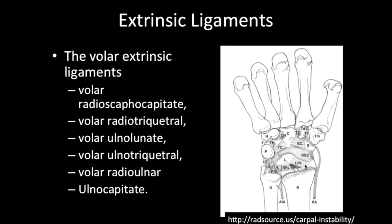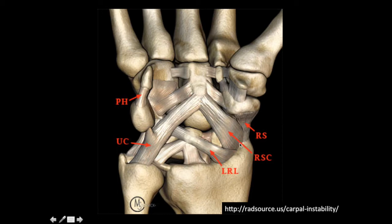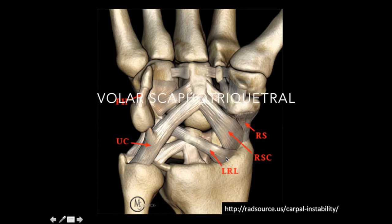Medial to the radioscaphocapitate, also arising from the volar margin of the radial styloid process, we see the long radiolunate ligament, also known as the volar radiotriquetral ligament. More immediately we will see the short radiolunate ligament, and then we see the ulnolunate and ulnotriquetral ligaments that we previously discussed with the TFCC. Here is a simpler representation showing the radioscaphocapitate and the ulnocapitate ligament collectively forming the arcuate ligament of the wrist. We also see the radial lunatotriquetral ligament, also known as the long radial lunate ligament, and along the far lateral margin the radioscaphoid ligament.